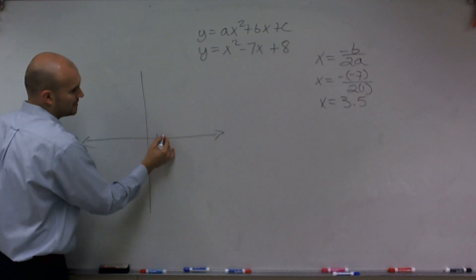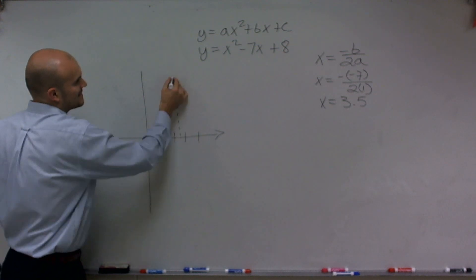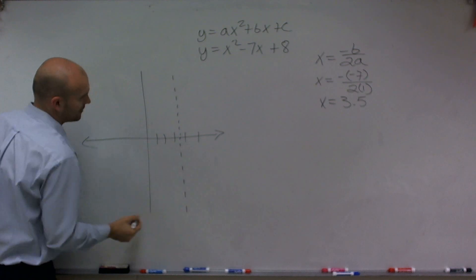So right now, the only thing I know about this graph is that I have a line of symmetry about 3.5.